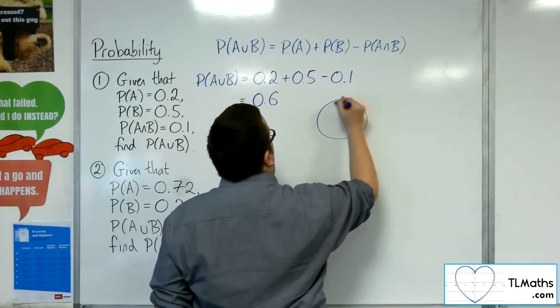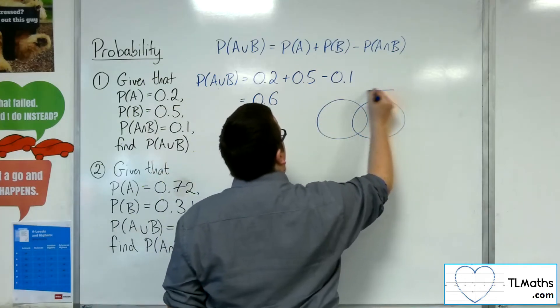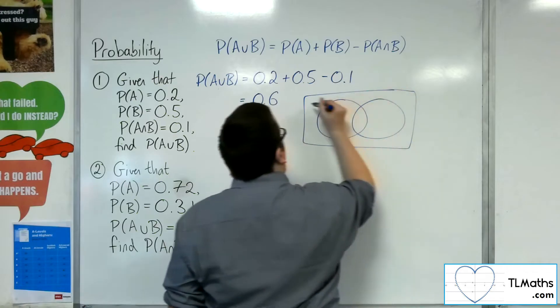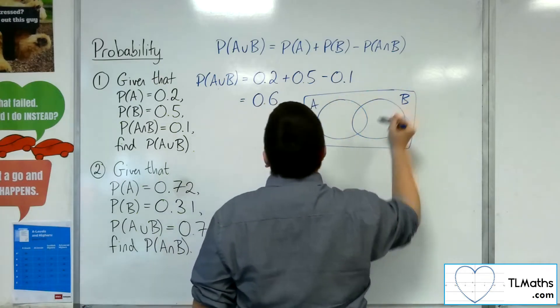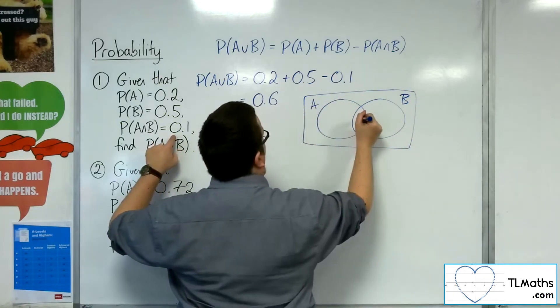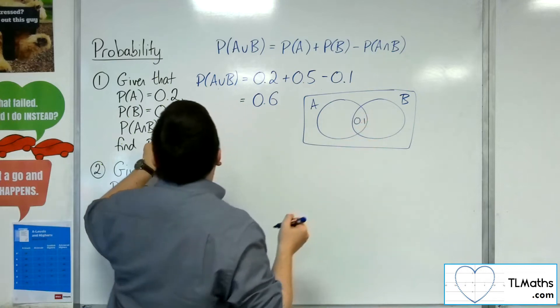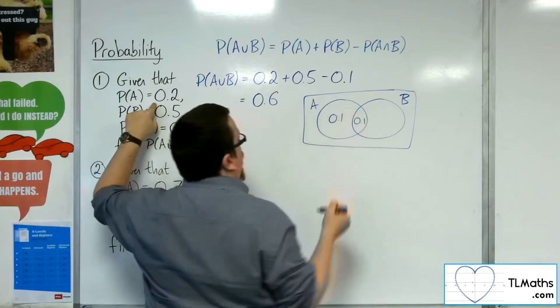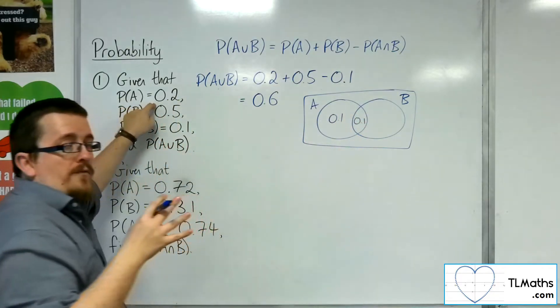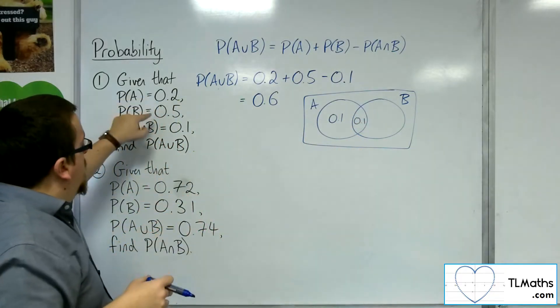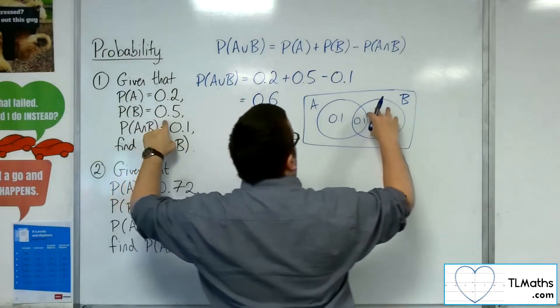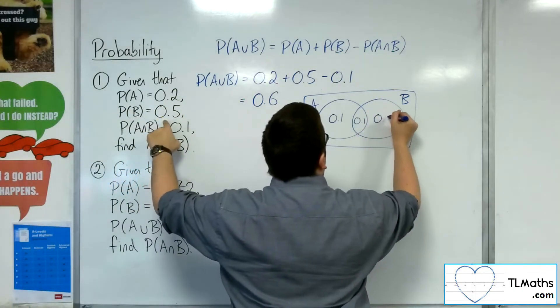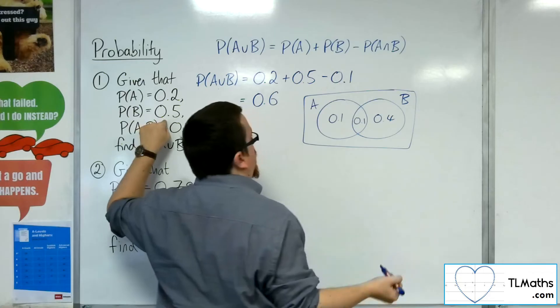So to visualize this as a Venn diagram, we've been told the intersection is 0.1, then the probability of A is 0.2, so that's that whole circle, so that would be 0.1. I'll go through another example of drawing a Venn diagram in the next video. Probability B is 0.5, so that remaining bit is 0.4 for those bits to add up to 0.5.